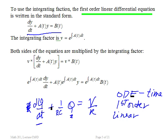And A and B can be constants. They can be functions of time, but they cannot be functions of Y. Now the integrating factor is ν equal to e raised to the integral of this coefficient of Y, the integral of A(t) dt. Here is our A here. So the integrating factor here is going to be e to the integral of 1 over RC dt.